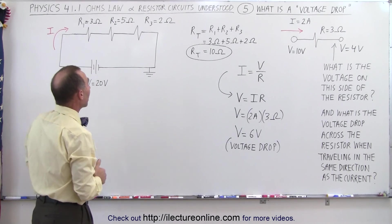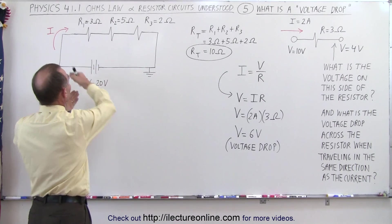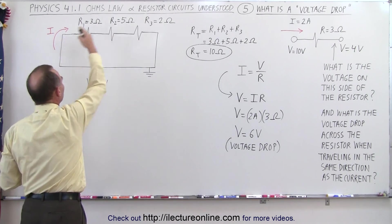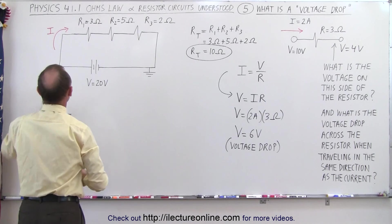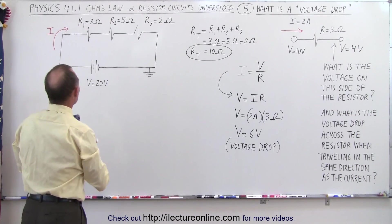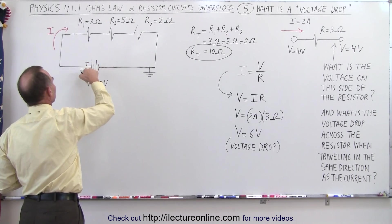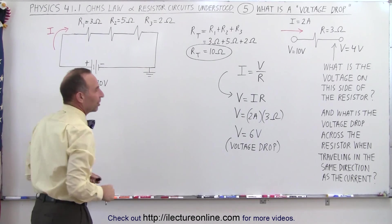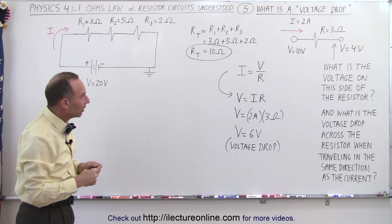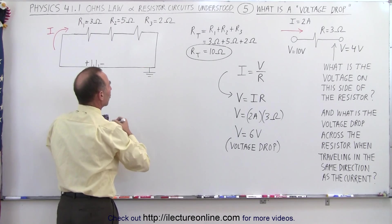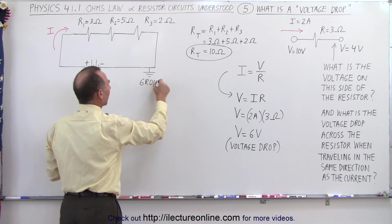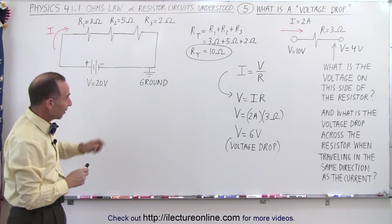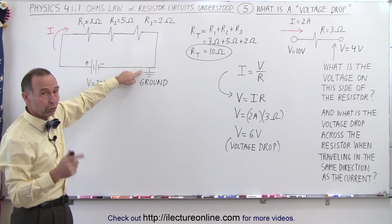Now here we have a more complicated example. We have three resistors in series with a 20 volt battery connected to the circuit that forces current to flow. We assume the current flows from the positive side of the battery to the negative side. We also have what we call a connection to ground — this is the ground symbol, which means we force this part of the circuit to 0 volts.